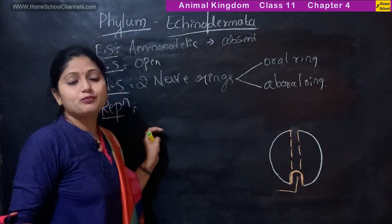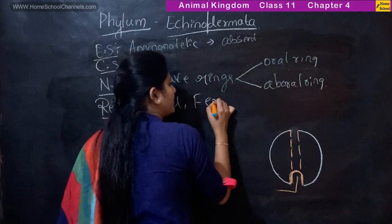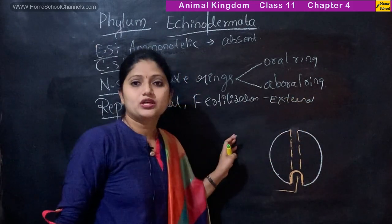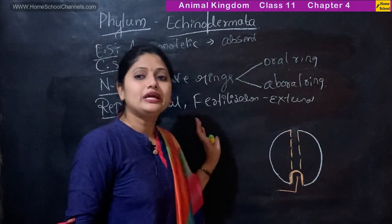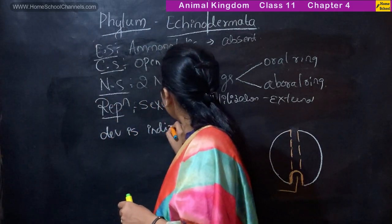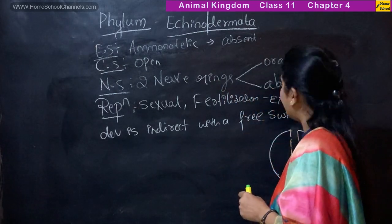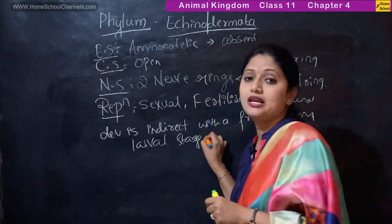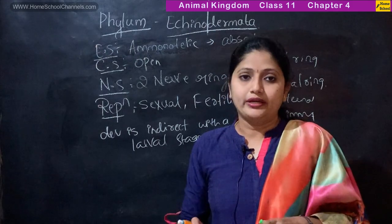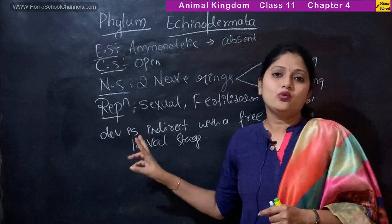For reproduction, it is mostly sexual reproduction. Fertilization is external. Development is indirect with a free-swimming larval stage — there is no direct development in echinoderms.